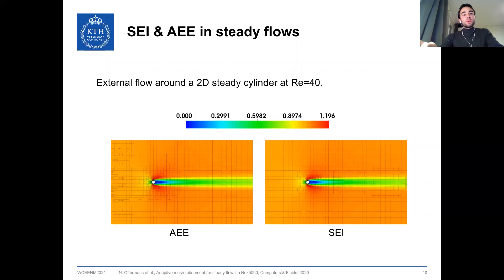Looking at the first comparison between the spectral indicator and adjoint error estimator for the 2D steady flow around a cylinder at Reynolds 40, we can already see two different refinement patterns. The spectral indicator refines in a more uniform way, only a bit more around the cylinder. On the other hand, for the adjoint error estimator, where the functional is the drag of the cylinder, we can see how the adjoint refines more and more around the cylinder and only the initial part of the wake, while the far-wake region is not refined at all.